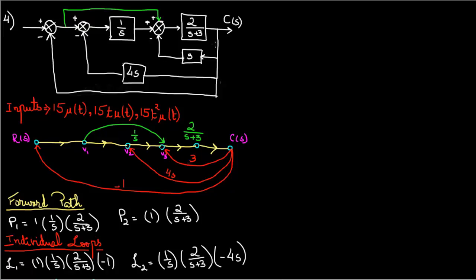For the loops what you would do is you look at the point where they start from. For instance this 3 at 4s and 1 starts at c of s, so you would go at c of s and go to those particular points where these loops end at.